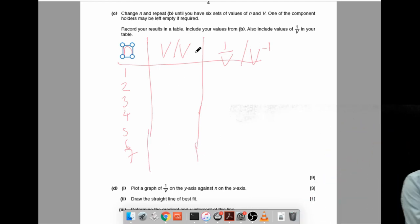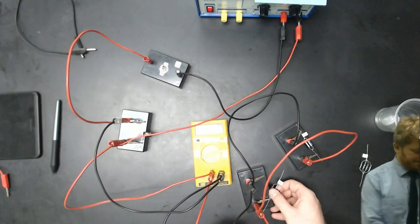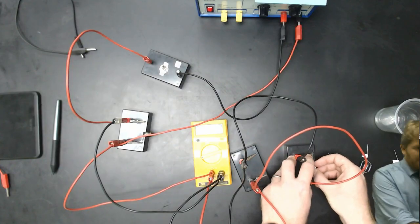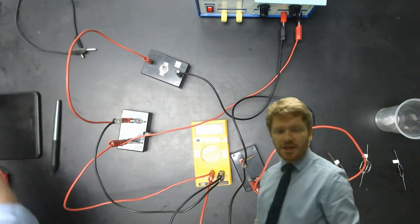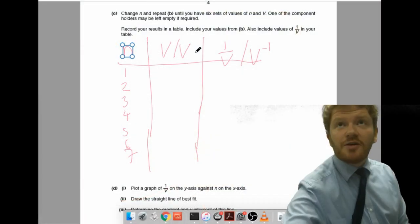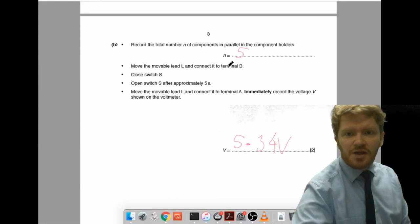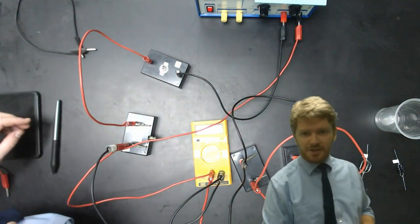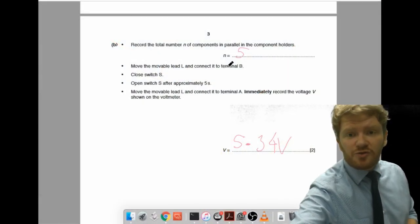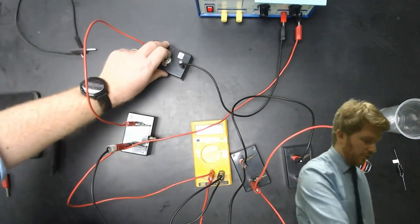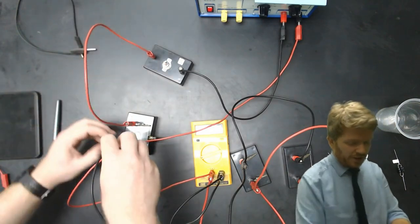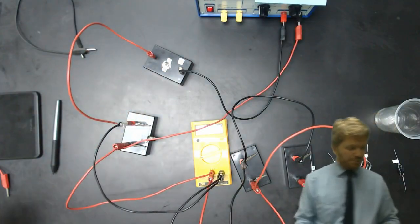So, let's might as well start right at the beginning. And I'm going to go with just one component by itself. So, N is 1. So, to do it with N is 1. And I'm going to put in one lonely little component by itself. And then I'm told to repeat B. So, let's just remind ourselves of point B. We move the switch L and connect it to B. So, there's L. Plugged it into B. We then need to close switch S and open it after 5 seconds. So, close it. Let me switch it on. 1, 2, 3, 4, 5. Turn it off. And then move it back to A and immediately record. That's 5.77.